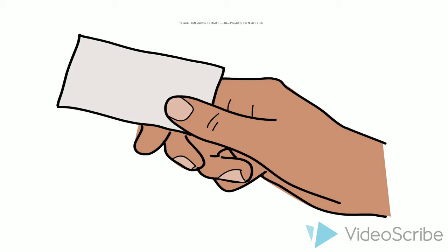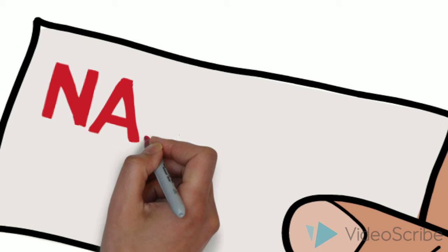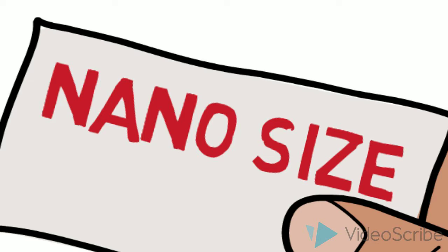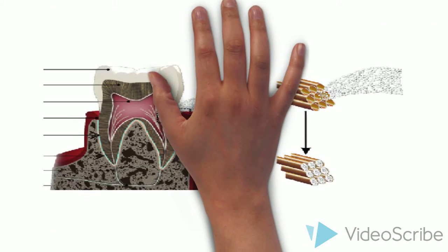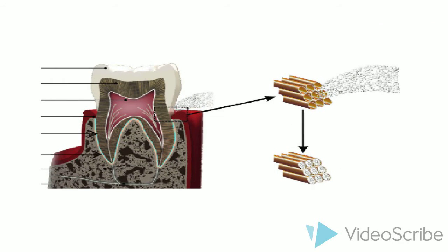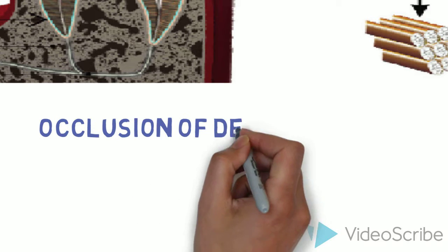This nanosize gives them high surface area, 80 square meters per gram, which helps to reduce dental hypersensitivity by effective occlusion of dentin tubules.